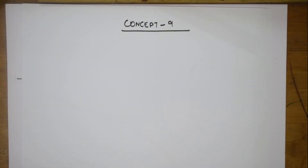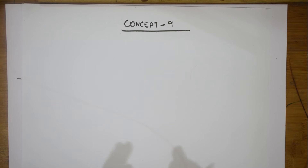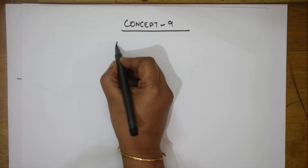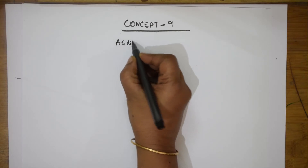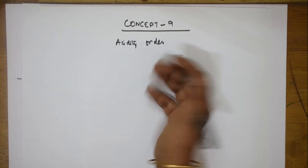Let us come back and do concept 9. In concept 9, I am doing questions based on acidity order and basicity order. Suppose if you have a question which involves both hydrocarbons — alkanes, alkenes, and alkynes — and along with that, if you have ammonia and amines, how should you remember the acidity order?